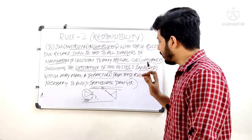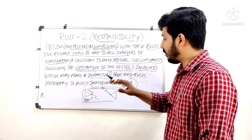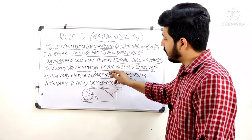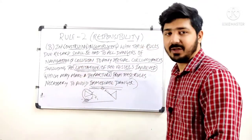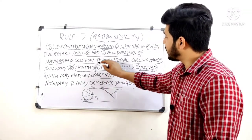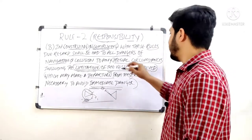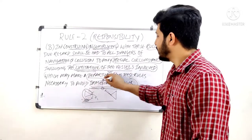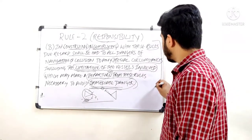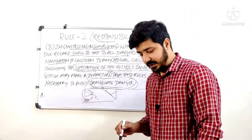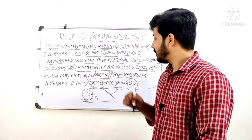Basically, at any cost you have to avoid any collision or navigation blunder — you have to get out of the situation as soon as possible, and you can depart from the rules to do that. But you should have a good reason: special circumstances or limitation of the vessel. It does not mean you depart from the rules all the time. When these conditions are present, you can depart from the rules to avoid immediate danger. Rule Number Two is all about responsibility — to save the vessel and the people on board, you have to do whatever it takes.